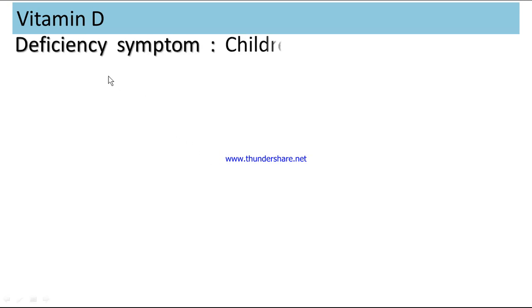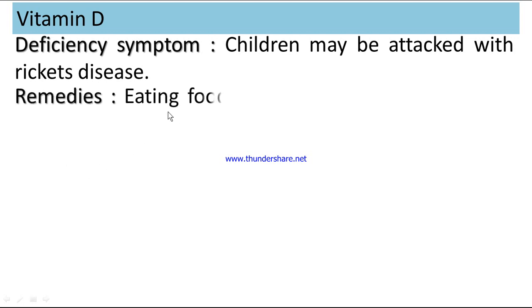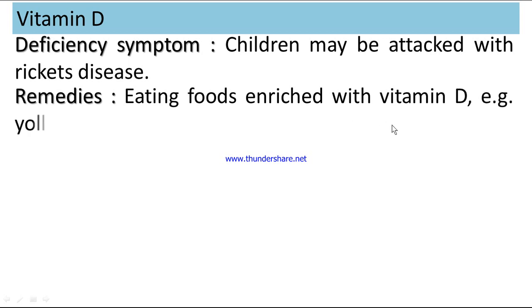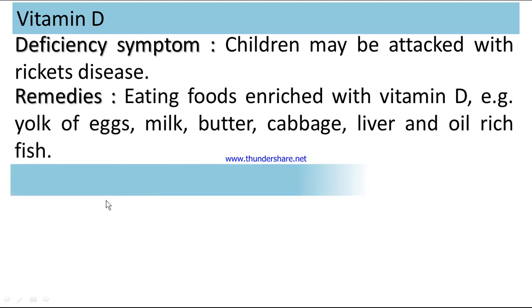Vitamin D — deficiency symptoms: children may be attacked with rickets disease. Remedies: eating foods enriched with vitamin D, e.g., eggs, milk, butter, cabbage, liver oil, rice fish.